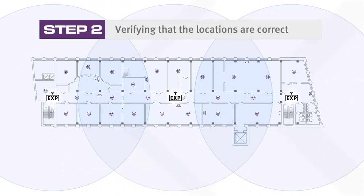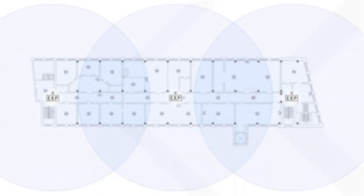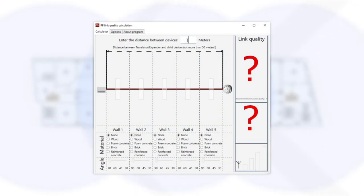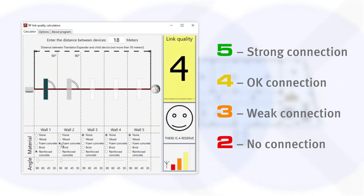The next step is verifying the locations of the expanders. Pick one of the expanders and find the device which is the farthest from it. In the communication quality calculator, input the distance and the type of walls between the two points. The connection strength is displayed on a scale from 2 to 5.